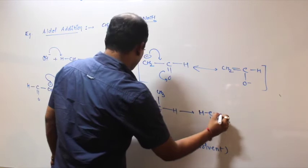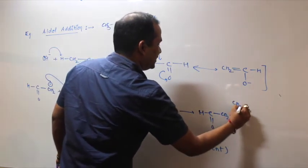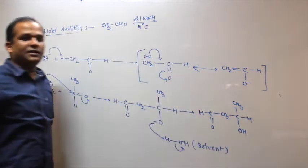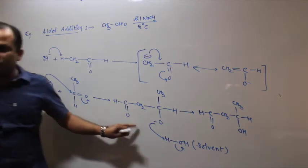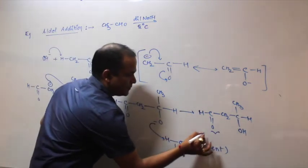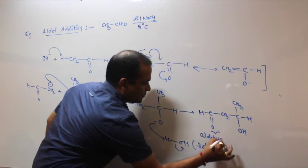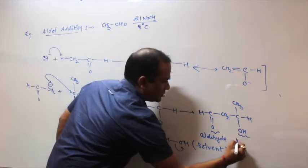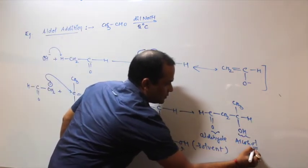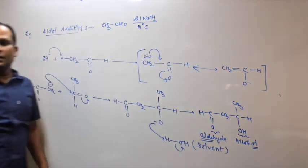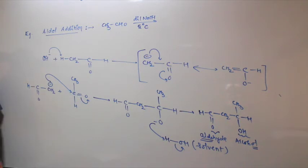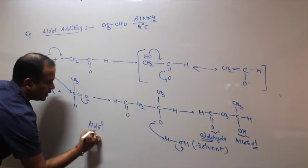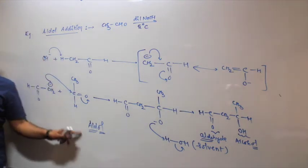H-C-O-CH2-CH3-OH, this product. And what is this? Aldehyde and alcohol. Aldehyde and alcohol.